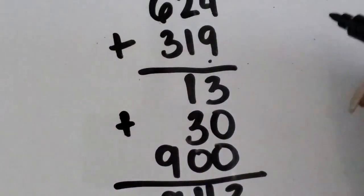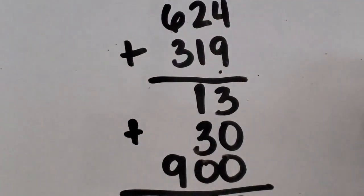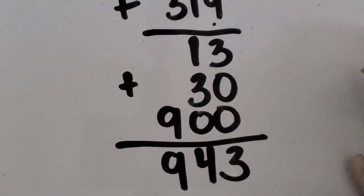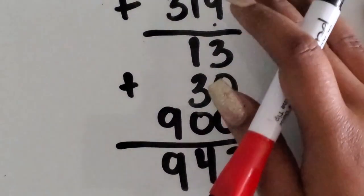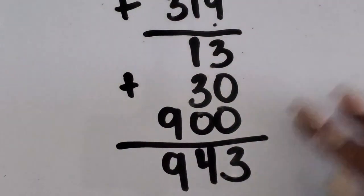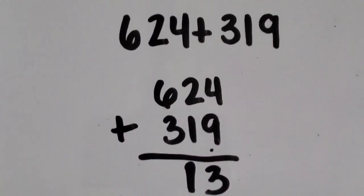So any regrouping and carrying was not necessary when you do it with the partial sum. So the total sum of six hundred twenty-four and three hundred nineteen is nine hundred forty-three.